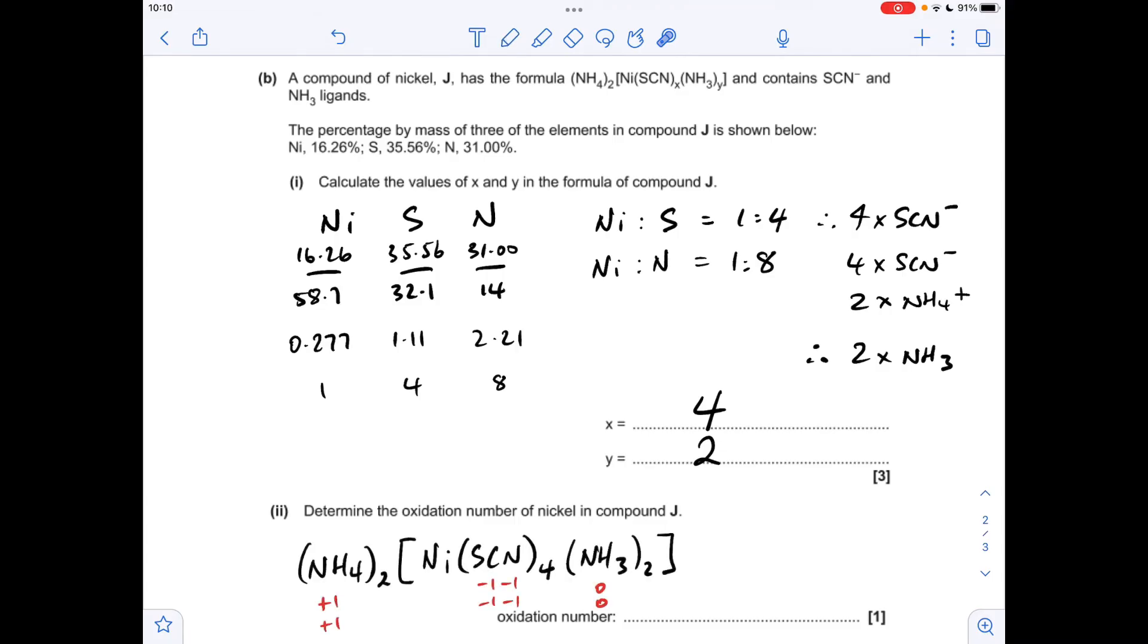Moving on to the final part, we've got to determine the oxidation number of nickel in compound J. There's the formula again—these are just the charges on the species in the brackets. We've got 2 ammonium ions plus 1 each, 4 SCN⁻ ions, and 2 neutral ammonia ligands. To keep the whole thing neutral—you can see there's no overall charge—the nickel has to be in the plus 2 oxidation state.